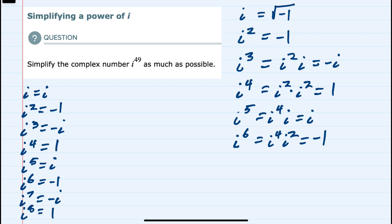So the most helpful takeaway is that any time we have i to a power of 4, that will be 1. So to simplify here,